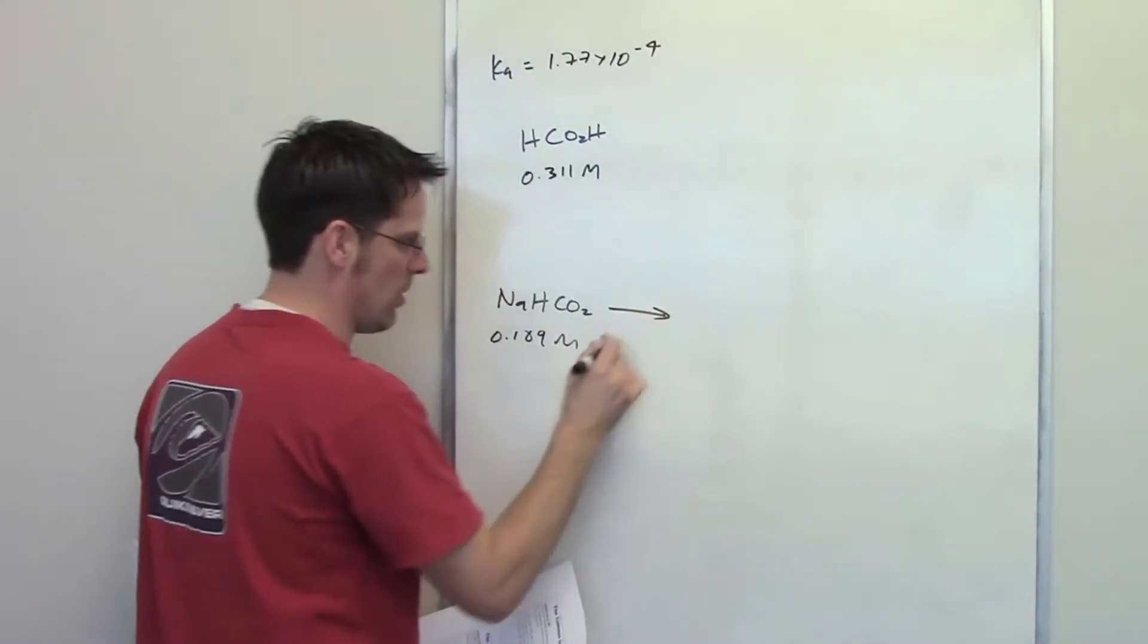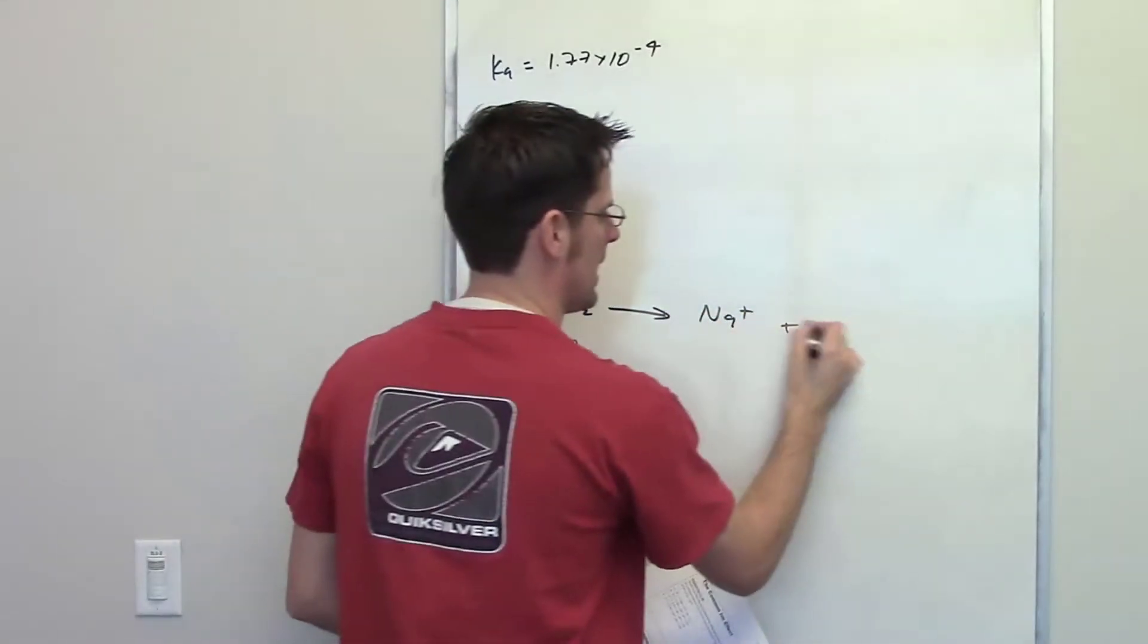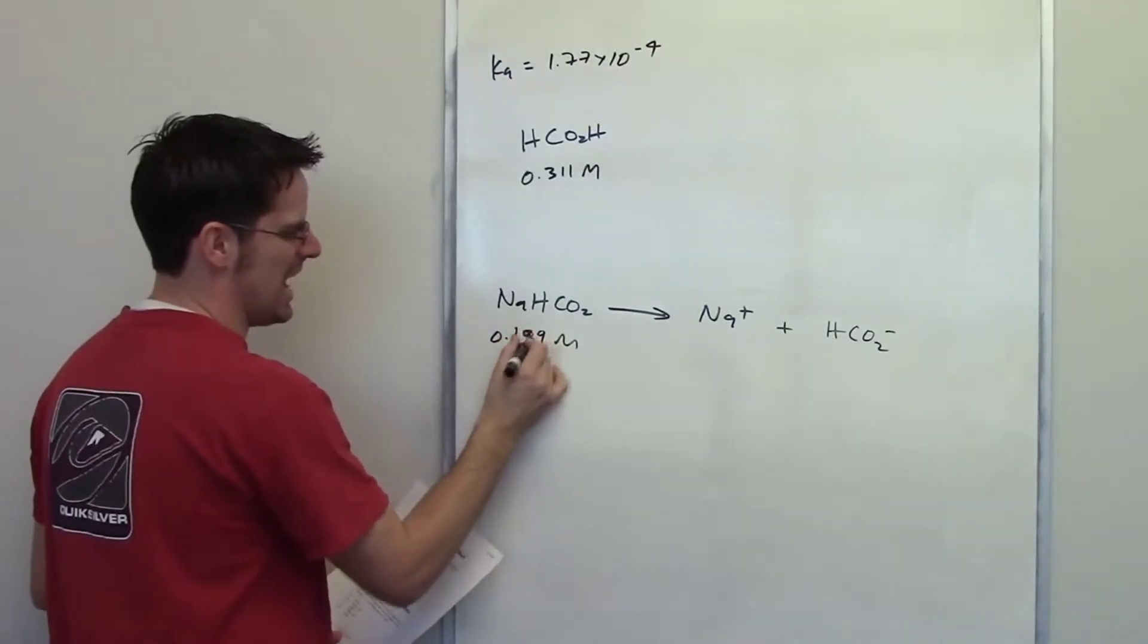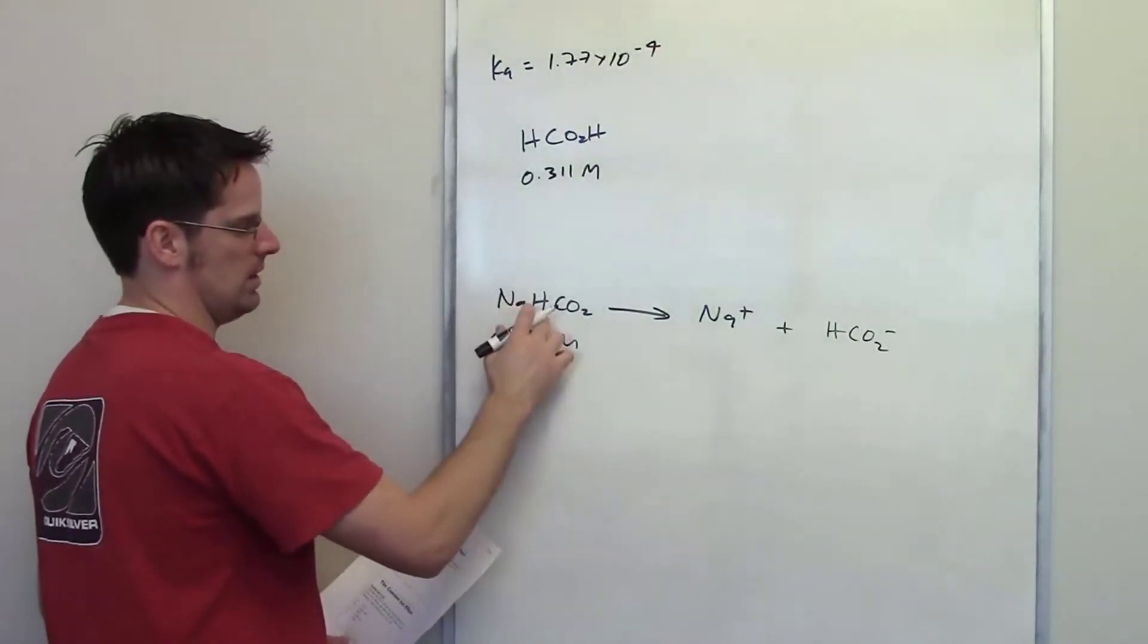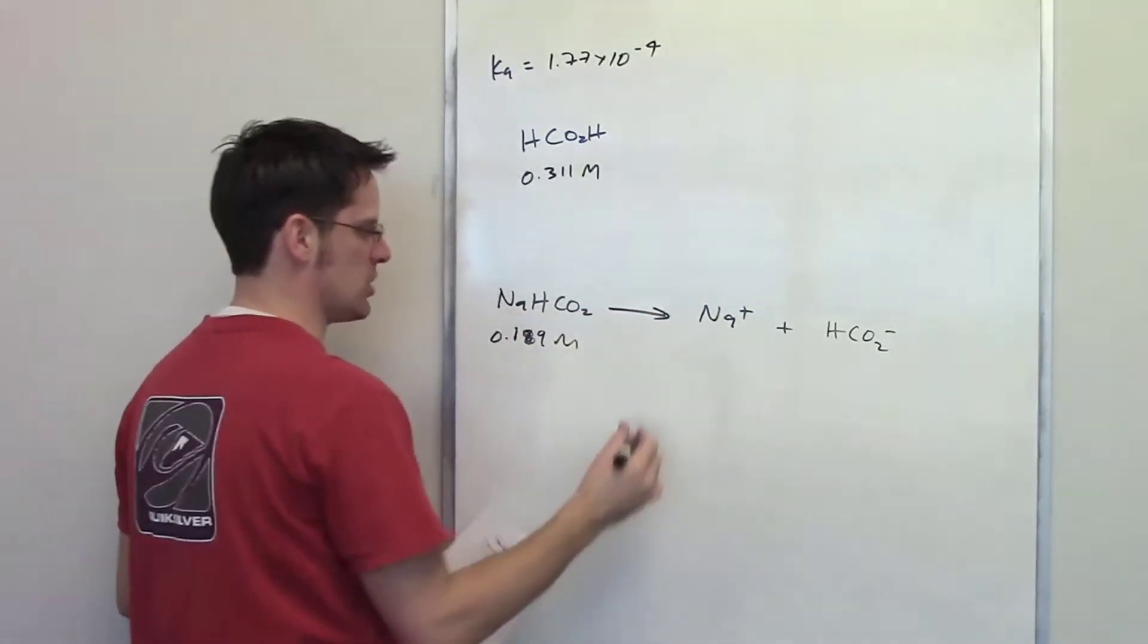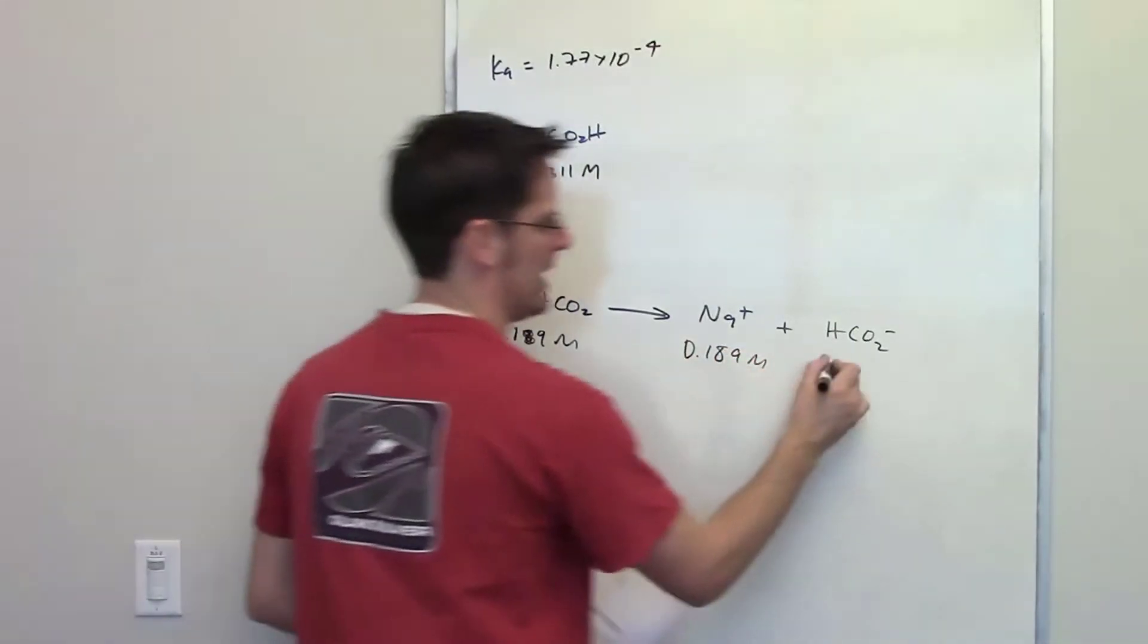It has a one-way arrow into its separate ions, sodium and hydrogen formate. Because we're starting out with 0.189 molar sodium formate, and this dissociates completely in a 1 to 1 to 1 ratio, the final concentration of each of these ions is also going to be 0.189 molar.